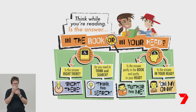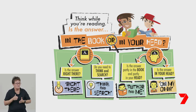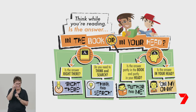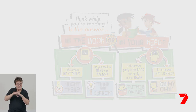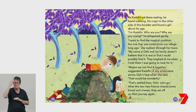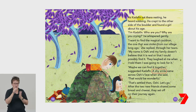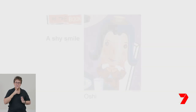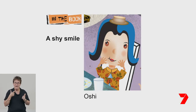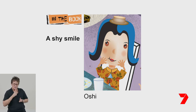Do you remember our QAR strategies? We can use these strategies to work out who Oshii is. Information about character traits can be found either in the book or in your head. If we are looking in the book, we can find some examples that the author has used. The author uses the noun group 'a shy smile' to describe Oshii — you can see right there in the book what the character is like. A shy smile tells me that Oshii is a shy but hopeful person.